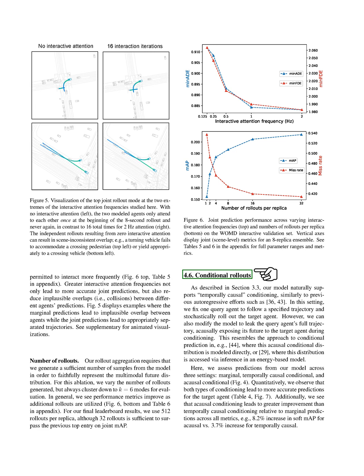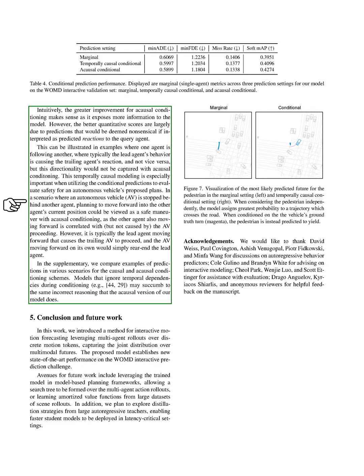Our model also supports temporally causal conditioning, where we fix one agent to follow a specified trajectory and stochastically roll out the target agent. We can also modify the model to expose the full trajectory of the query agent to the target agent during conditioning. We found that both types of conditioning led to more accurate predictions for the target agent. However, a causal conditioning, which exposes more information to the model, led to a greater improvement than temporally causal conditioning. However, the better scores for a causal conditioning are largely due to predictions that would be nonsensical if interpreted as predicted reactions to the query agent. For example, in a scenario where an autonomous vehicle (AV) is stopped behind another agent, planning to move forward into the other agent's current position could be viewed as a safe maneuver with a causal conditioning, as the other agent also moving forward is correlated with, but not caused by, the AV proceeding. However, it is typically the lead agent moving forward that causes the trailing AV to proceed, and the AV moving forward on its own would simply rear-end the lead agent.